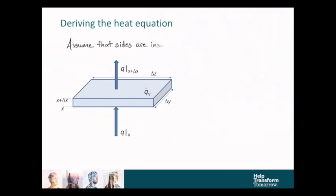In order to derive the heat equation, we have to start by assuming that all of the sides are insulated, so that heat is only transferring in the x direction. And we'll perform an energy balance on the heat that's transferring. And this is every chemical engineer's mantra: accumulation equals in minus out plus generation.